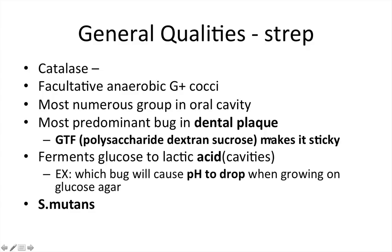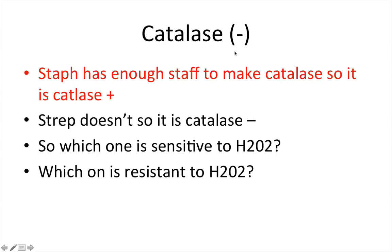On the next slide that breaks it down more clearly: strep ferments glucose to lactic acid and causes cavities — specifically strep mutans does this. An example exam question might ask which bug causes the pH to drop when grown on glucose agar. The pH is dropping because the bug is producing lactic acid — that's the connection they want you to make.